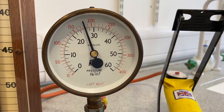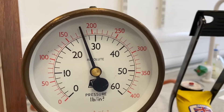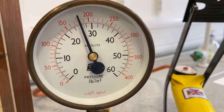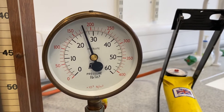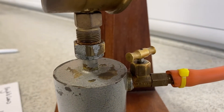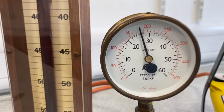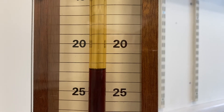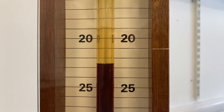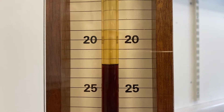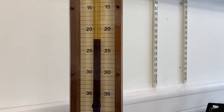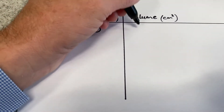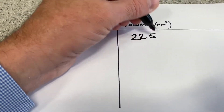We've pumped air into the cylinder and the pressure has gone up to about 180 kilopascals — remember our scale is times ten to the three newtons per square metre, the same as kilopascals. We've shut the little tap at the back. When we pump the pressure up, the volume of air pushes the oil down and the volume of air has gone down to 22.5 cubic centimetres. So when the pressure was 180 kilopascals, the volume of the trapped air was 22.5 cubic centimetres.